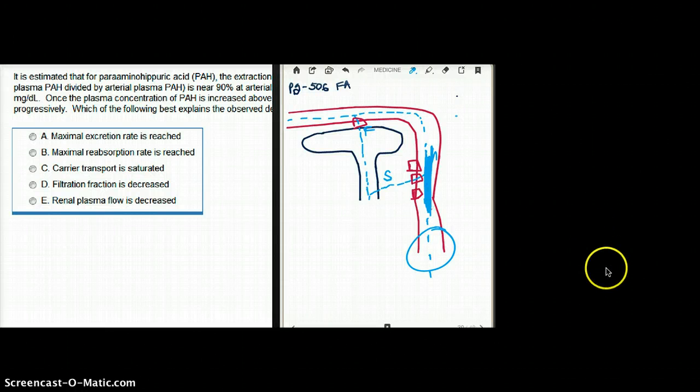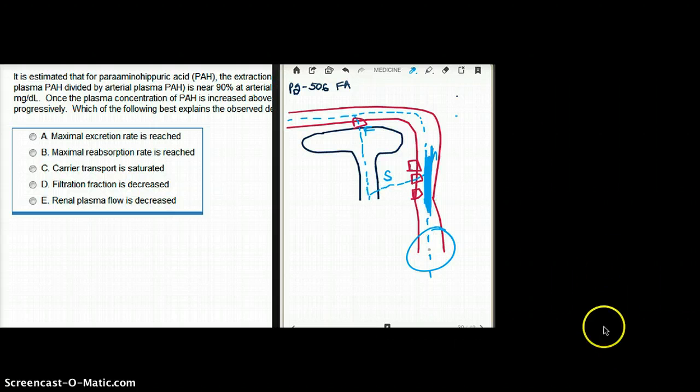So if you have so much PAH in your system, you might see some of the PAH back in the blood because your carrier is just saturated. But none of it is reabsorbed back. None of it is going back here at any point. Just wanted to throw it out there.